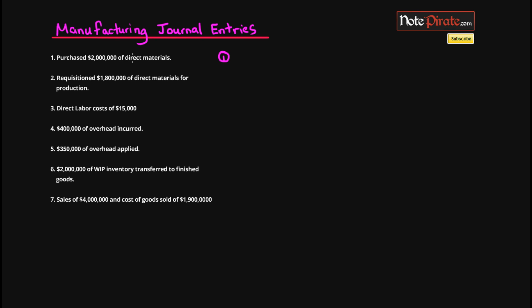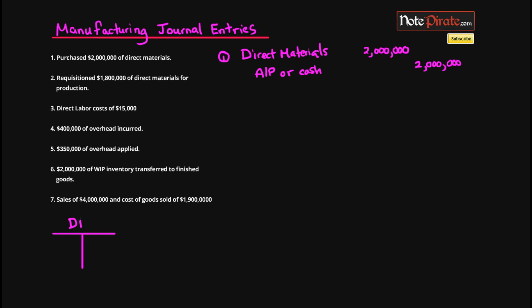The first transaction: we purchased $2,000,000 of direct materials, so our direct materials account is going to increase. We're going to debit direct materials for $2,000,000, and then credit accounts payable or cash — depending on whether we're using credit or cash — for $2,000,000. I'll create the T-account: DM gets a $2,000,000 debit on the left, and accounts payable or cash gets a $2,000,000 credit.